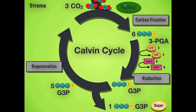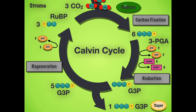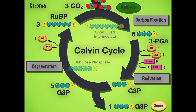This is called the regeneration phase. We take one G3P out but send five back in to keep the cycle moving. After adding three ATP, that produces RuBP — ribulose bisphosphate. We get three RuBP, which recombines with the three CO2 input to continue the cycle. There are also short-lived intermediates, including ribulose phosphate, in this process.